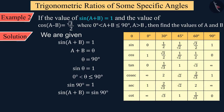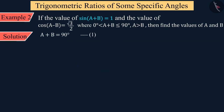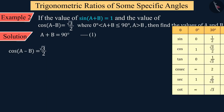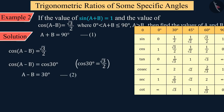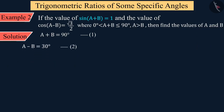Comparing both sides, we get A + B = 90°, shown as equation 1. Similarly, for cos(A − B) = √3/2, using the table, the value of A − B is obtained as 30°, shown as equation 2.